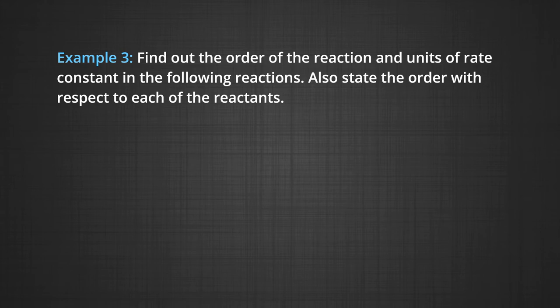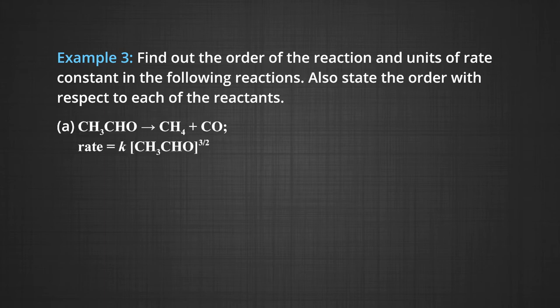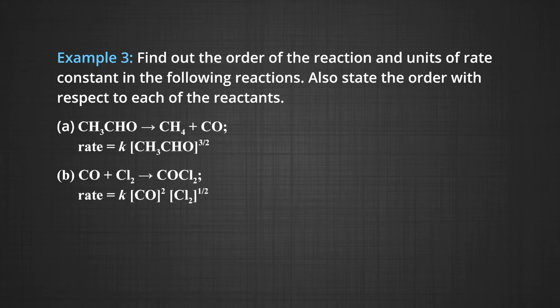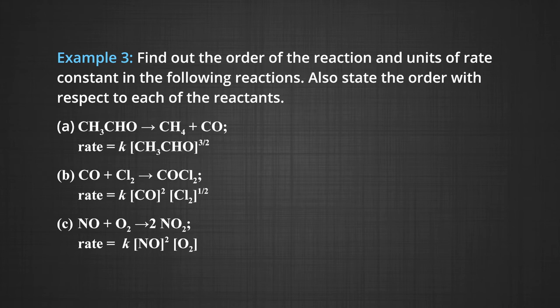Again another example: find out the order of a reaction and the units of the rate constant in the following reactions, and also state the order with respect to each reactant. Reaction A: CH3CHO (acetaldehyde) → CH4 + CO, with rate = k[CH3CHO]^(3/2). Reaction B: CO + Cl2 → COCl2, with rate = k[CO]²[Cl2]^(1/2). Reaction C: 2NO + O2 → 2NO2, with rate = k[NO]²[O2]¹.